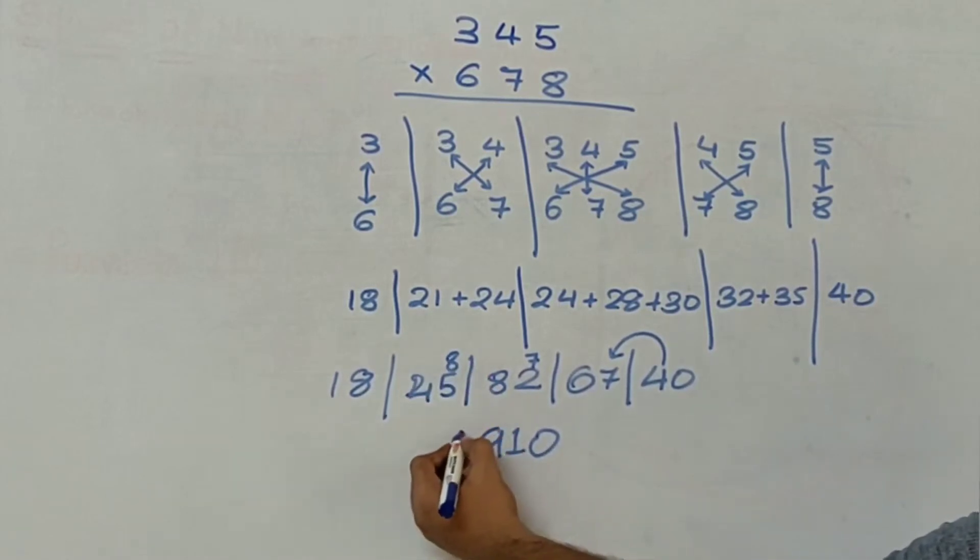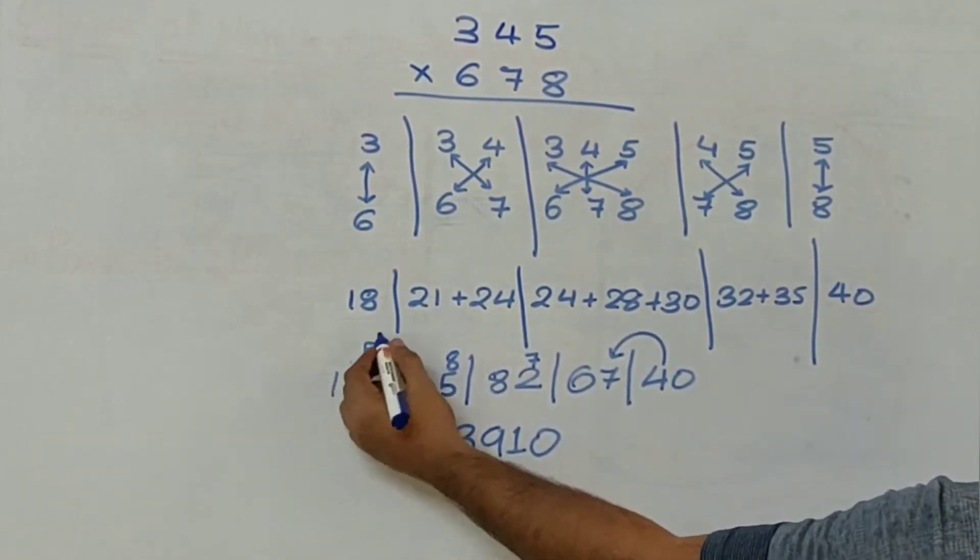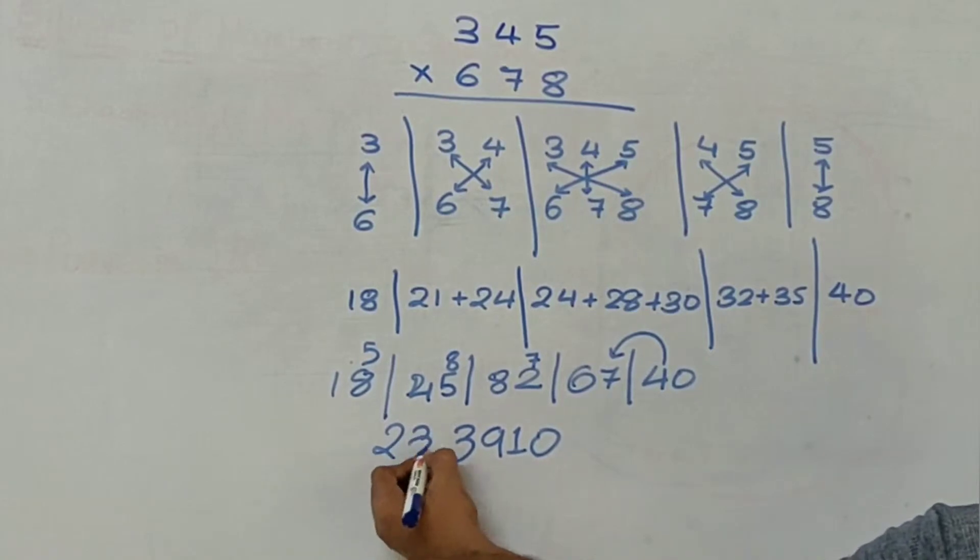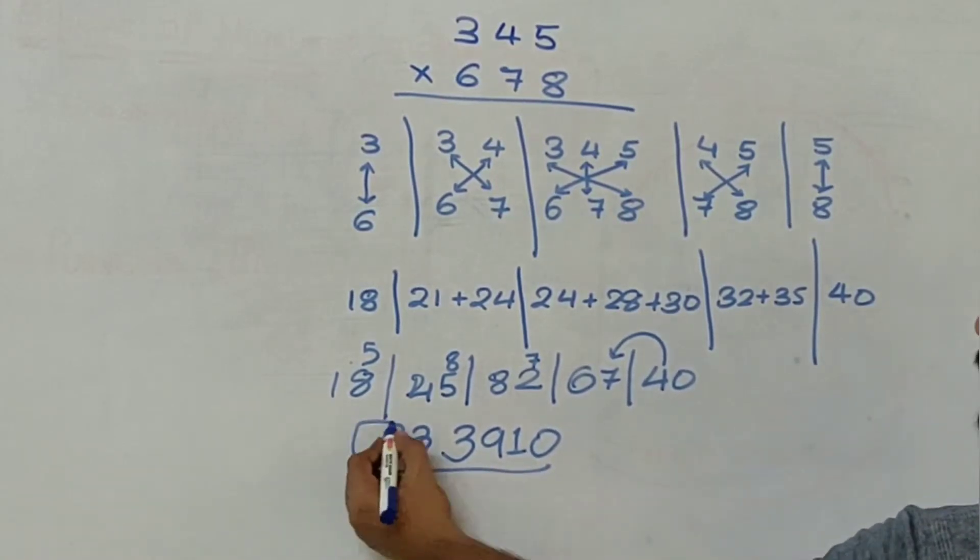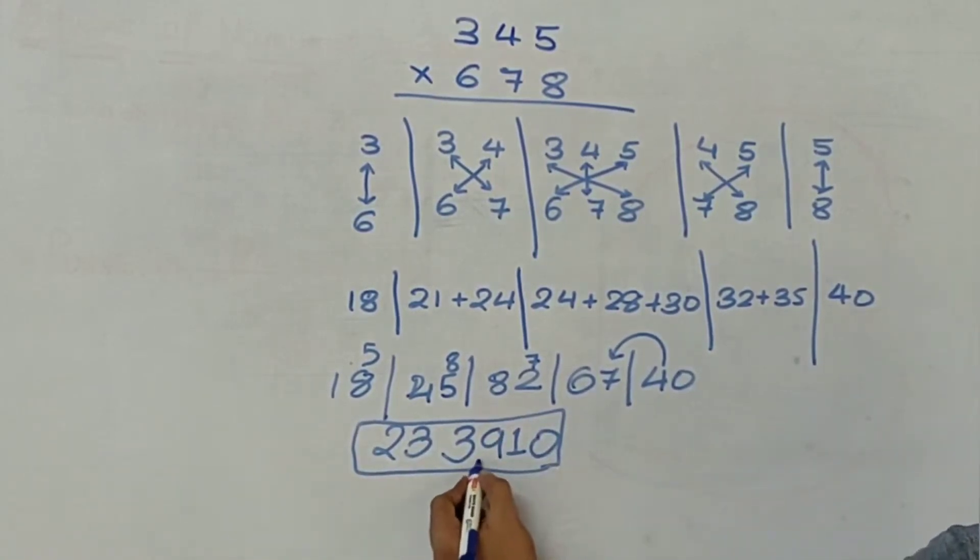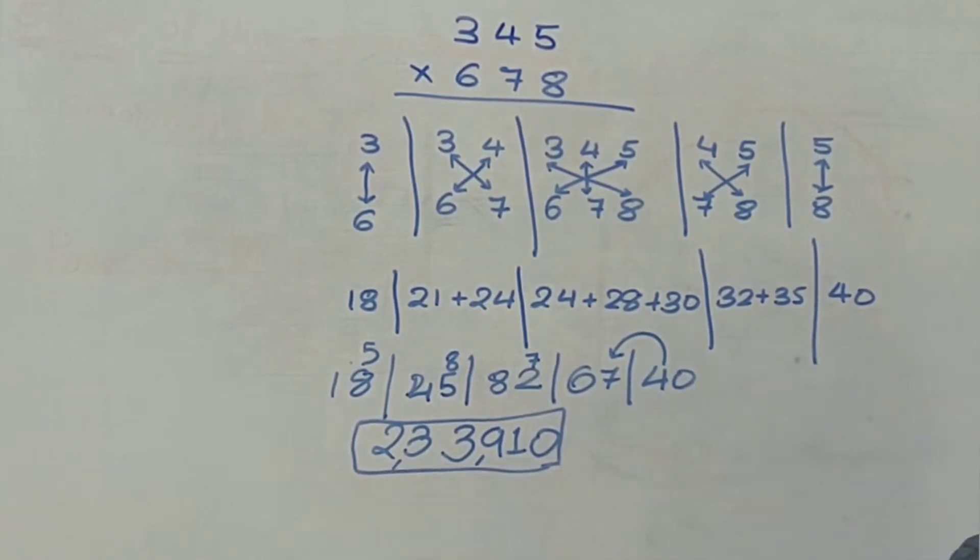45 plus 8 gives me 53. 18 plus 5 gives me 23. So my answer is 233910.